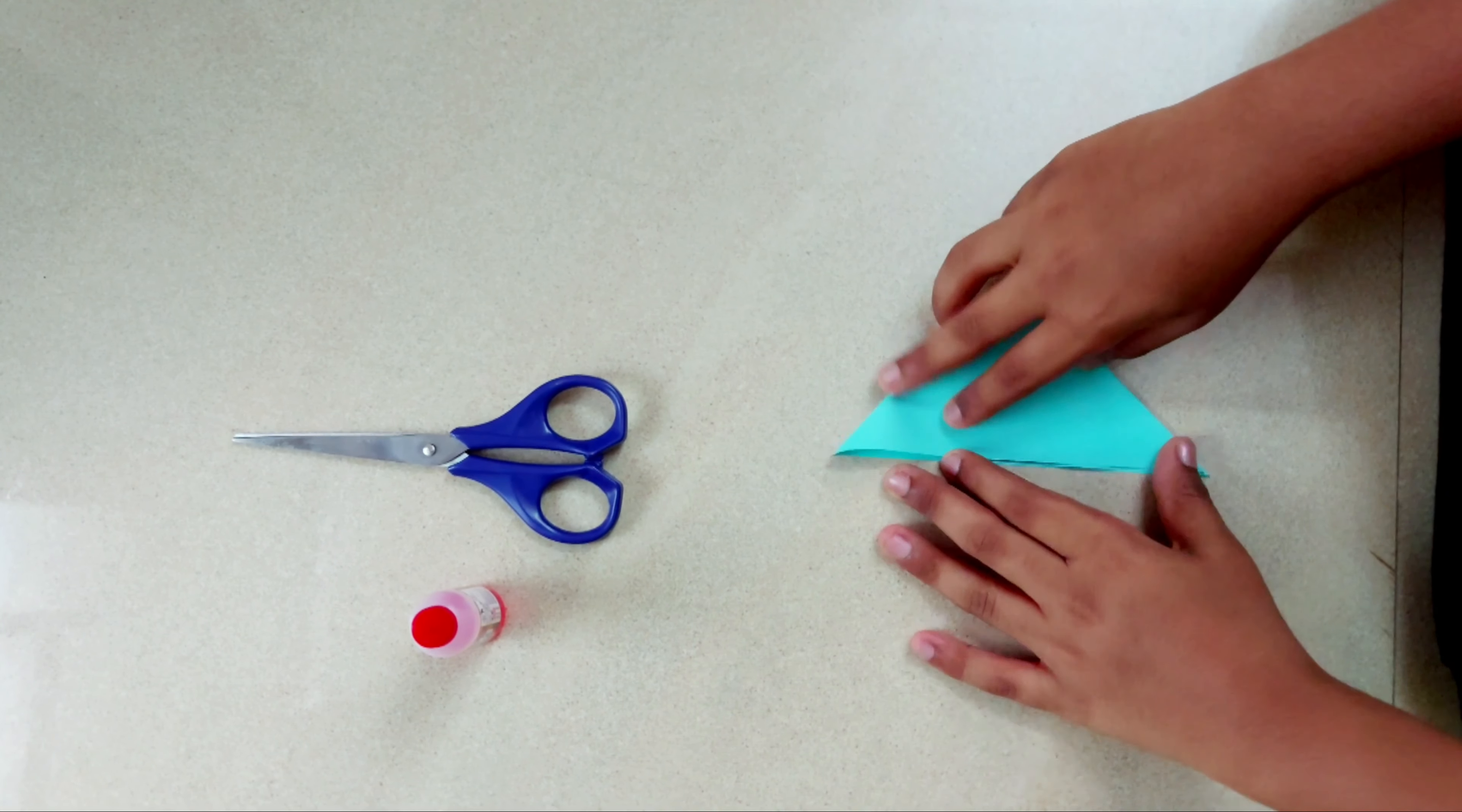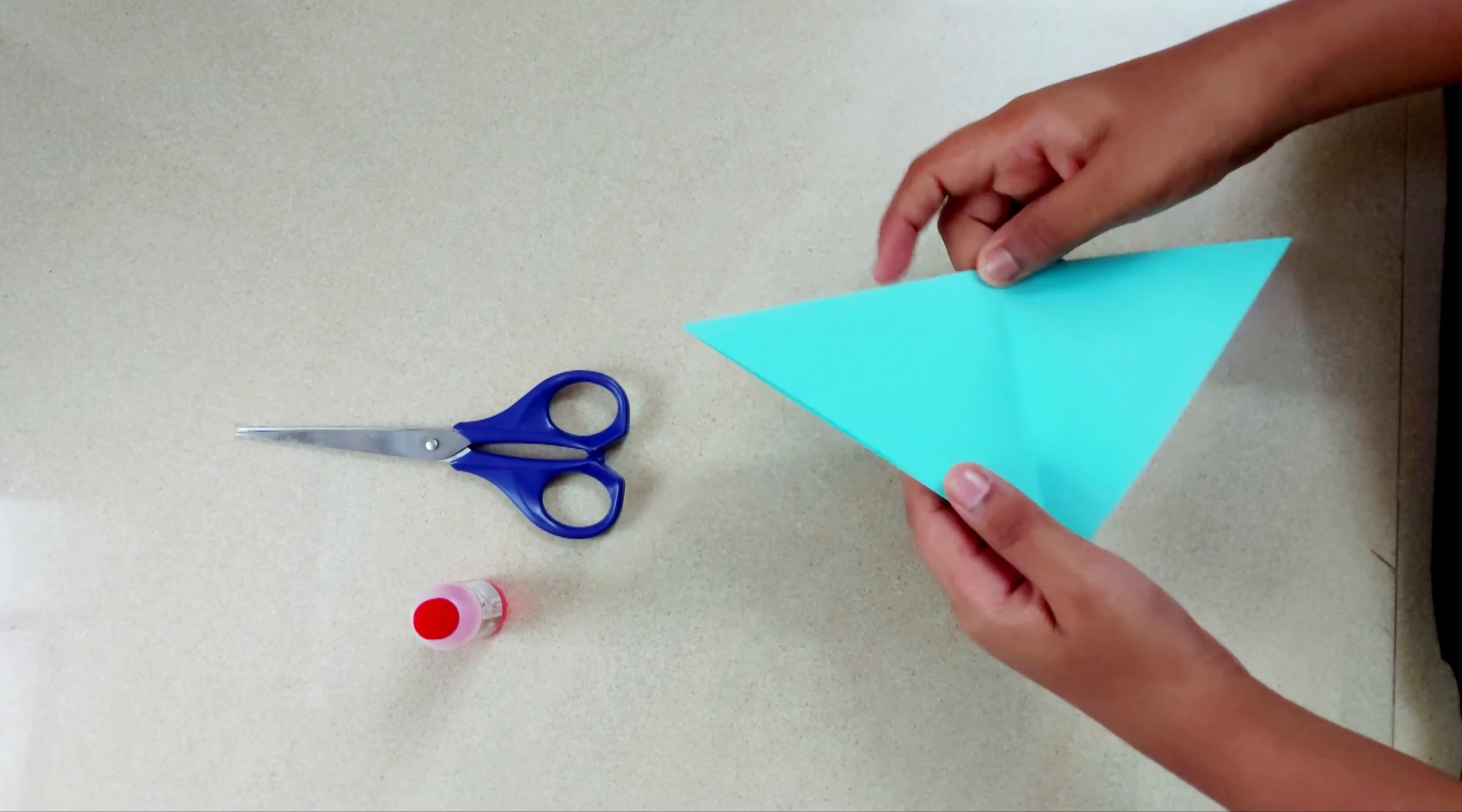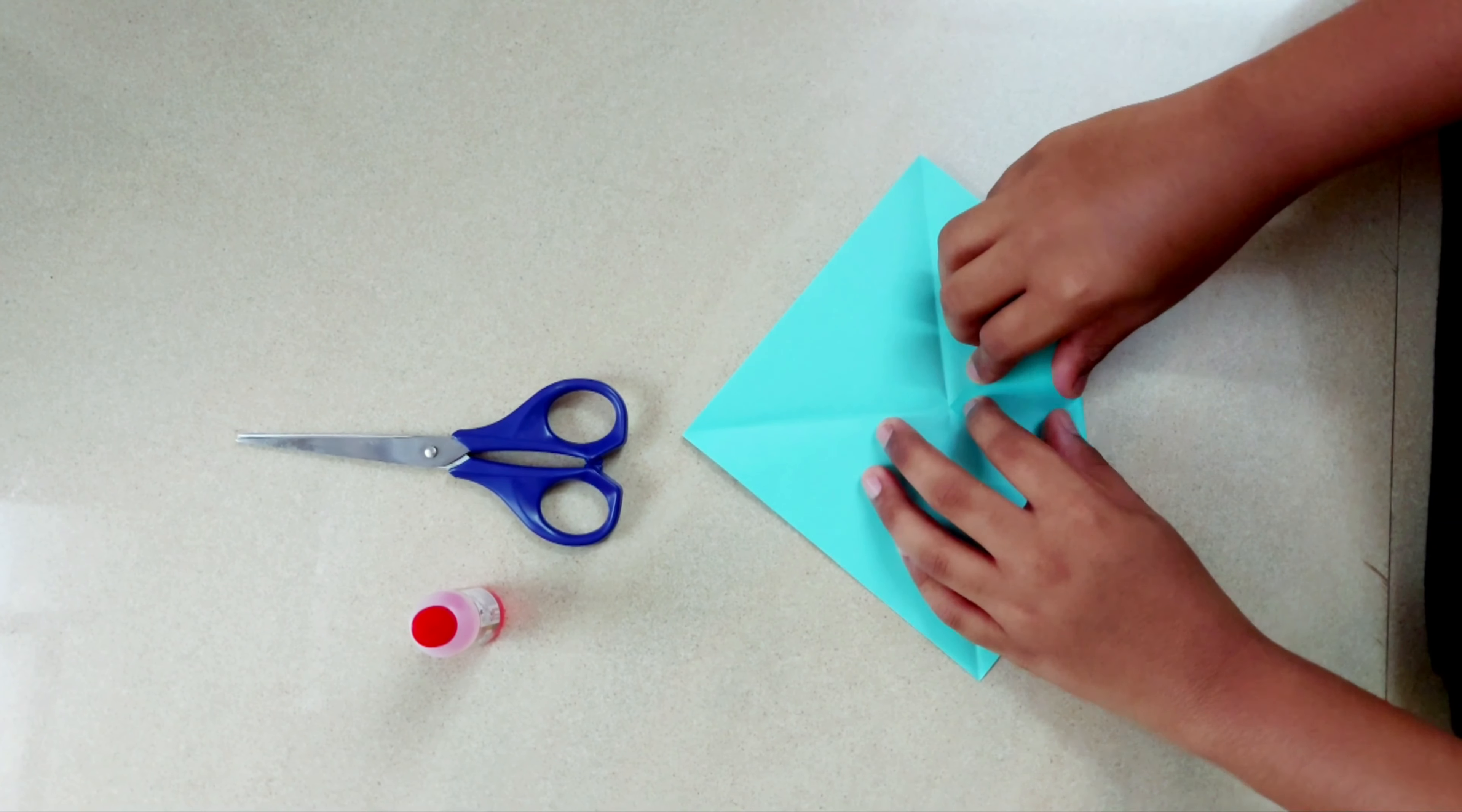Make another triangle on the other side. Now take out the paper and make another triangle inside the paper.